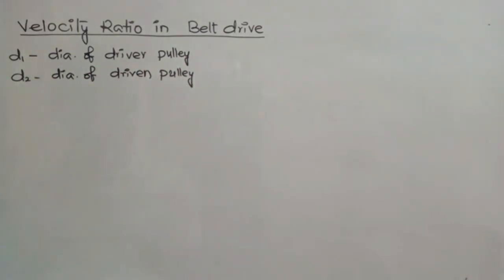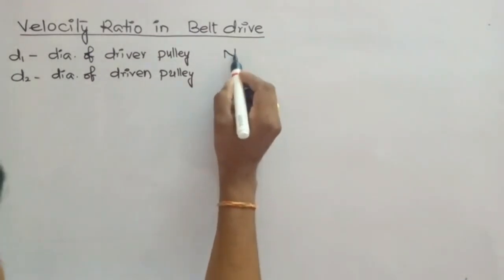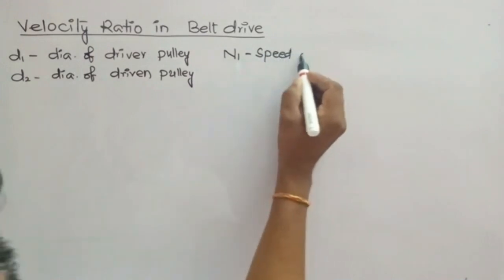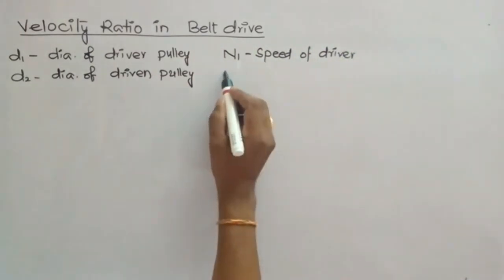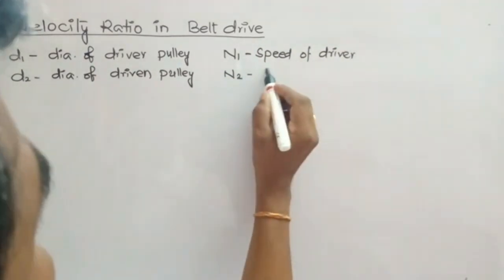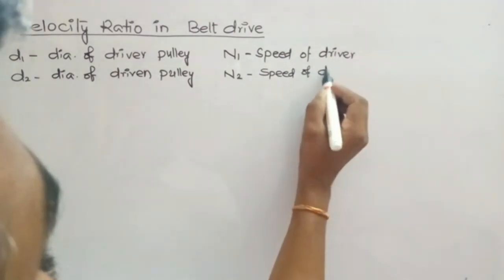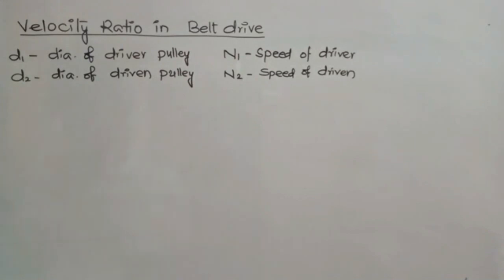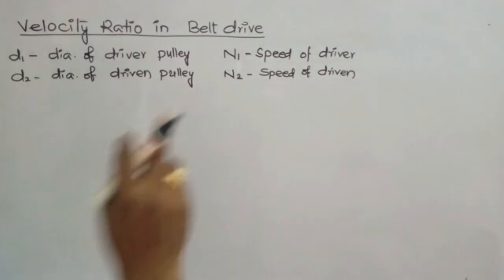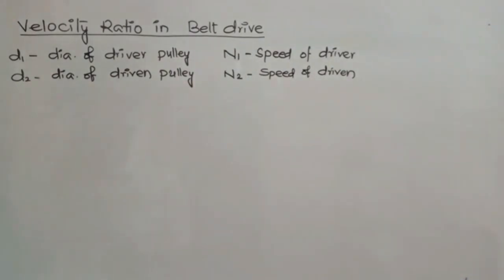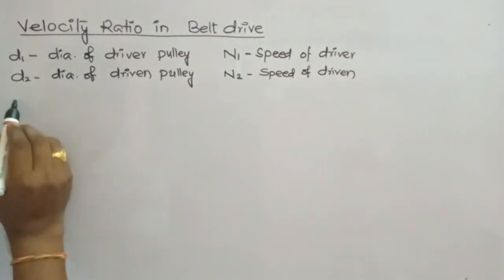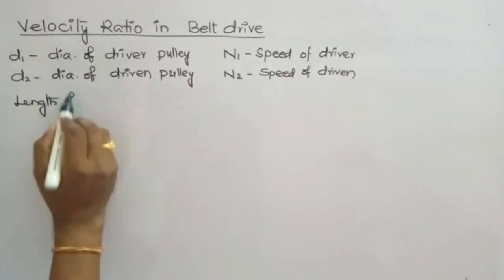N1 is the speed of the driver in terms of RPM, and N2 is the speed of the follower. These speed values are represented in terms of RPM — revolutions per minute, meaning how many revolutions the pulley completes in one minute. Now, the length of the belt that passes over the driver in one minute.